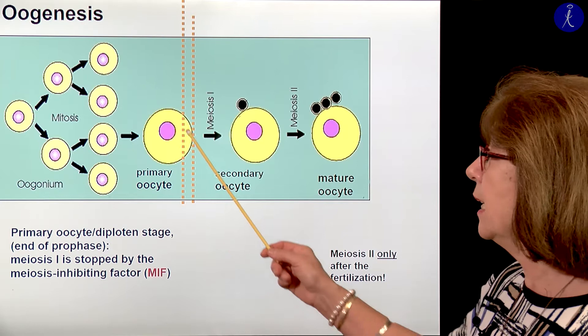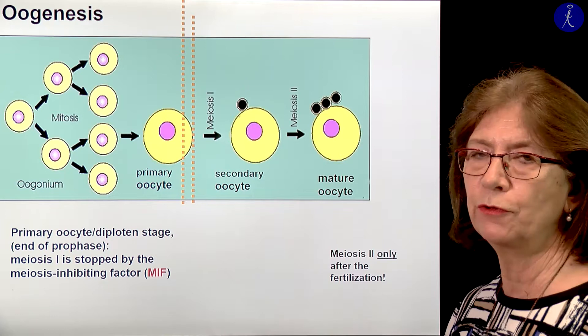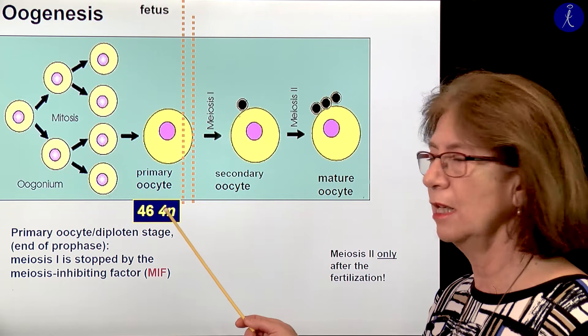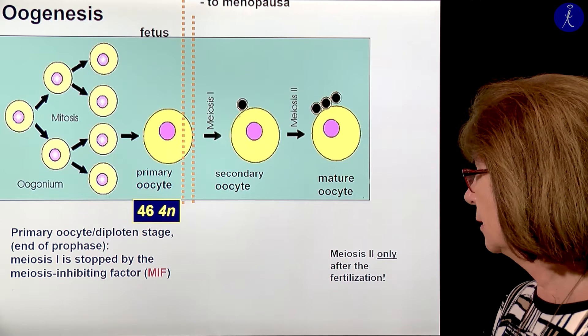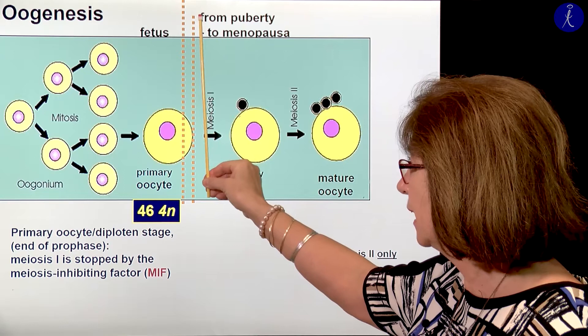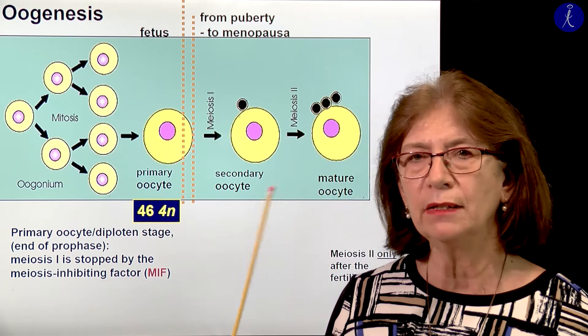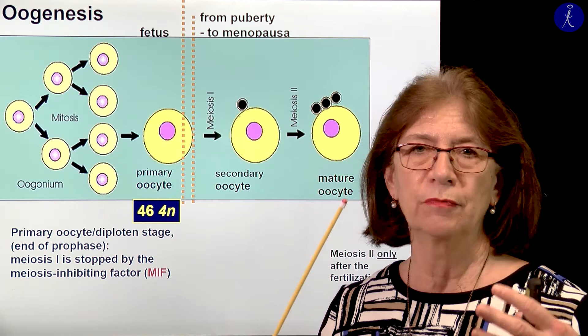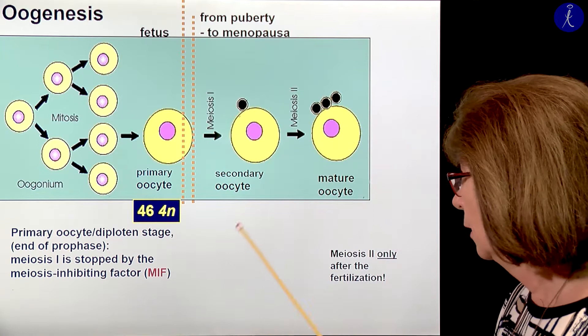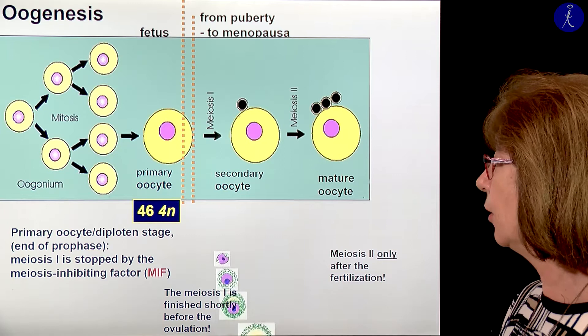We have this primary oocyte, which started the first meiotic division, has 46 chromosomes — each a double-stranded chromosome, marked traditionally as 4N. This line represents birth, and this distance represents the period between the stop in fetal life and the continuation, which may happen at age 13, 25, 36, or 44. This further development happens within the follicle.